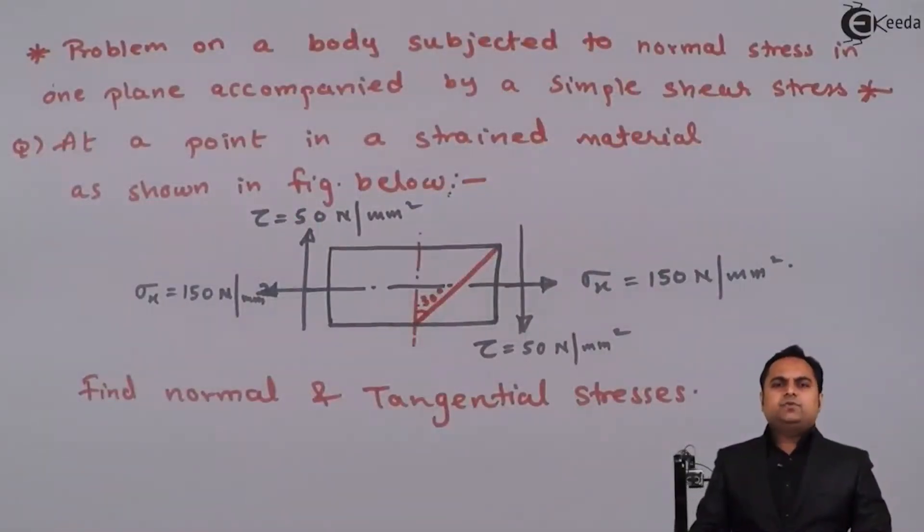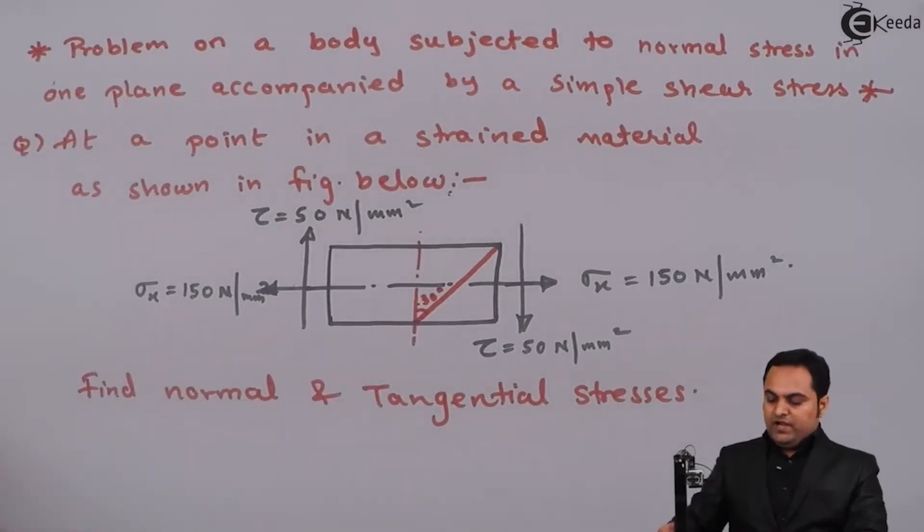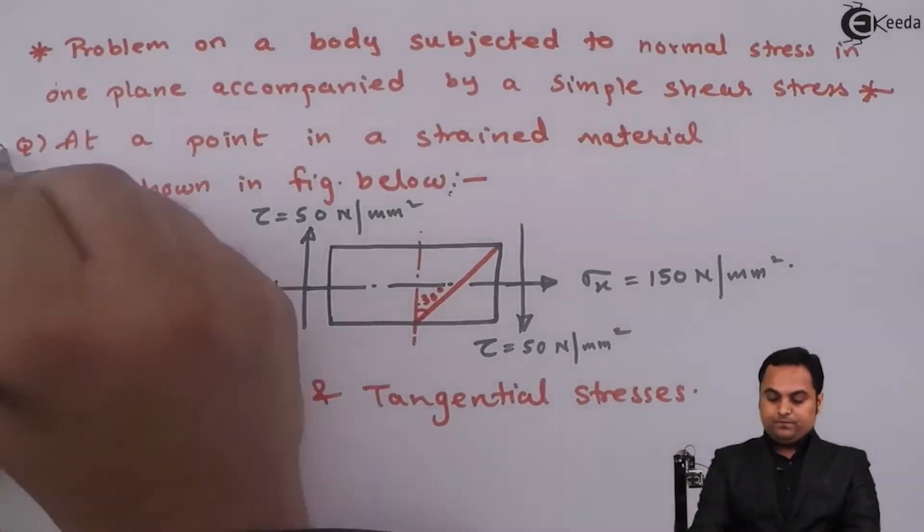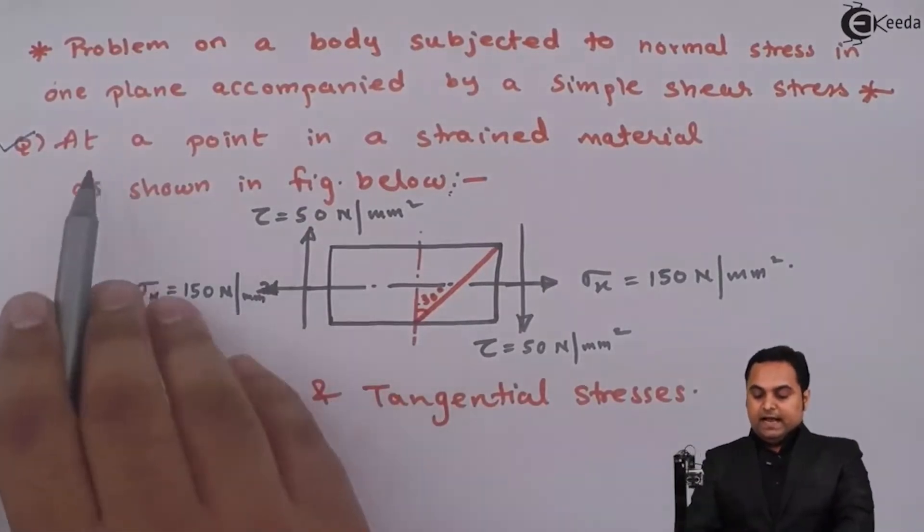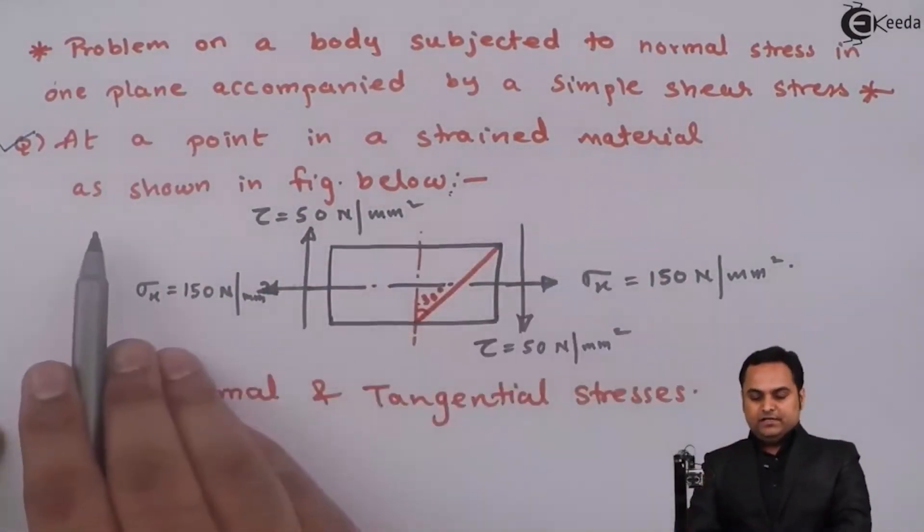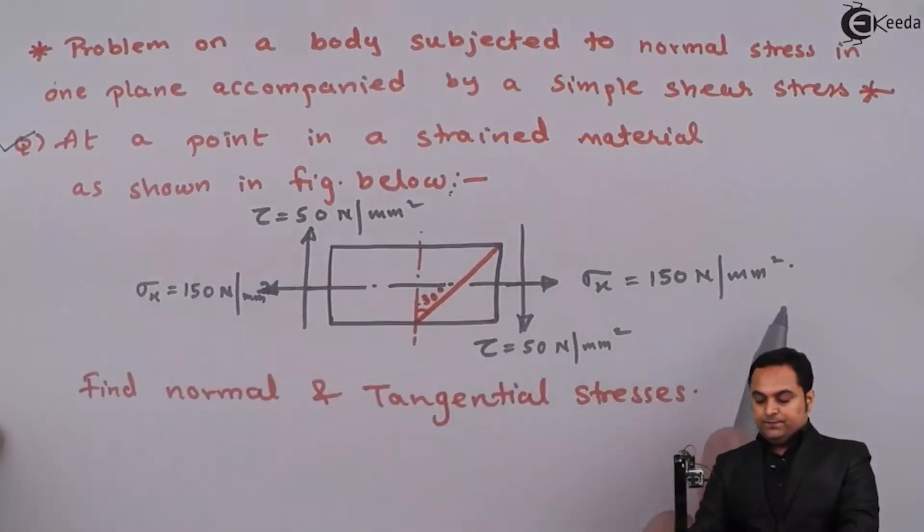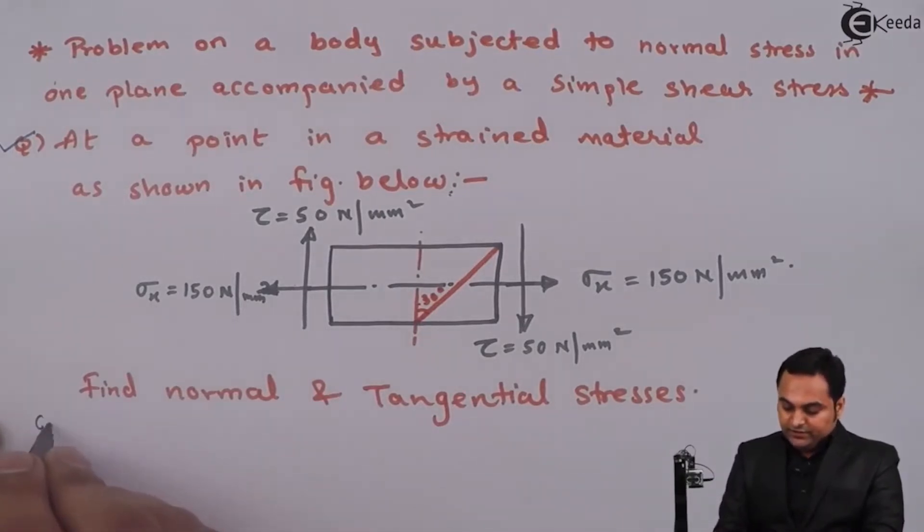Hello friends, in this video on the problem of principal stresses in plane, we have a question. It is given that at a point in a strained material as shown in figure, the diagram is given, and with the help of this diagram we have to find normal and tangential stresses. So I'll write the data for this.